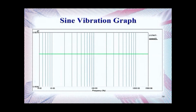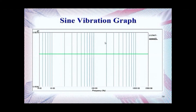Here is an example of a Sine Vibration Graph. On the vertical axis, the unit of measurement is G's. On the horizontal axis, the unit of measurement is frequency. Here we have a frequency range of 5 to 2,000 hertz, and our test profile is 0.5 G's. This is our Sine Demand Line — it's a flat spectrum sine test. This is typically the profile used for Sine Resonant Sweeps to find your resonant frequencies.